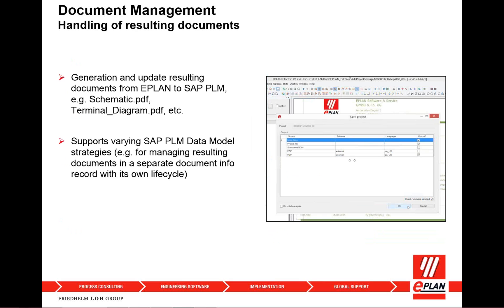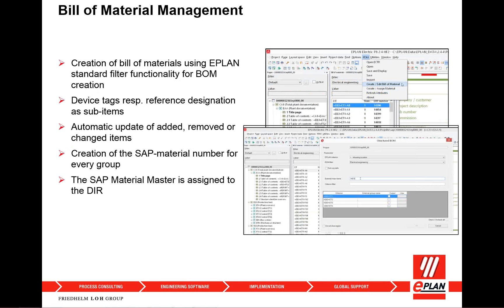ePlan also provides a lot of additional documents — connection lists, cable lists, SPS programs, IO lists, and so on. We are able to hand over all these reports and resulting documents to be stored within the SAP PLM system. Even the bill of materials handed over from ePlan to SAP includes reference designators for easily following up in the schematics and synchronizing between the bill of materials and the documents that ePlan provides.